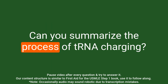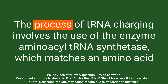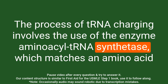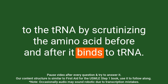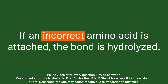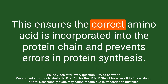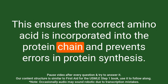Question: Can you summarize the process of tRNA charging? Answer: The process of tRNA charging involves the enzyme aminoacyl-tRNA synthetase, which matches an amino acid to the tRNA by scrutinizing the amino acid before and after it binds to tRNA. If an incorrect amino acid is attached, the bond is hydrolyzed, ensuring the correct amino acid is incorporated into the protein chain and preventing errors in protein synthesis.